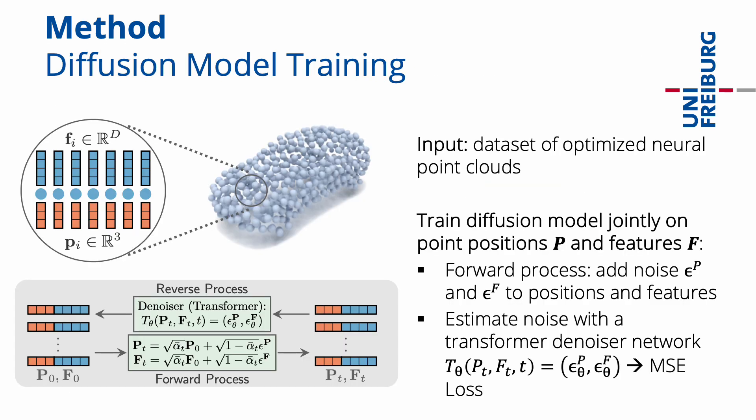In the second training stage, we train a diffusion model on the optimized neural point clouds of the N objects from the previous stage. We train the diffusion model jointly on the point positions and features.